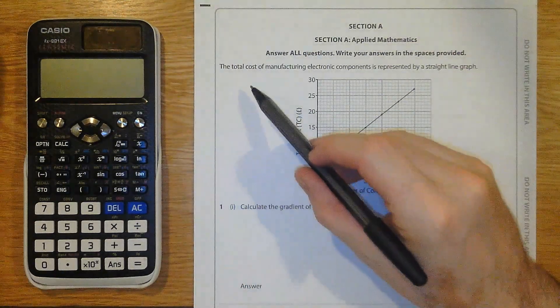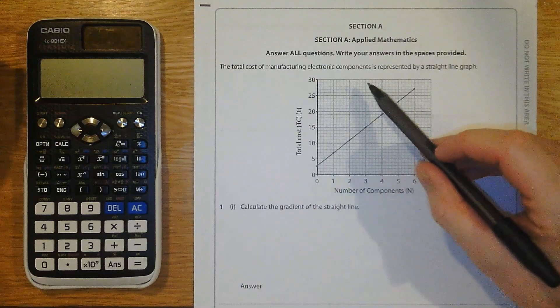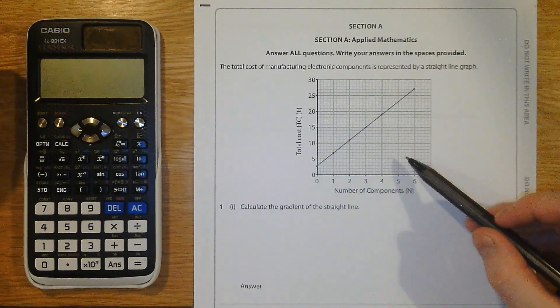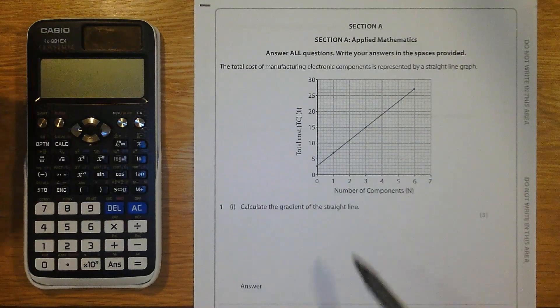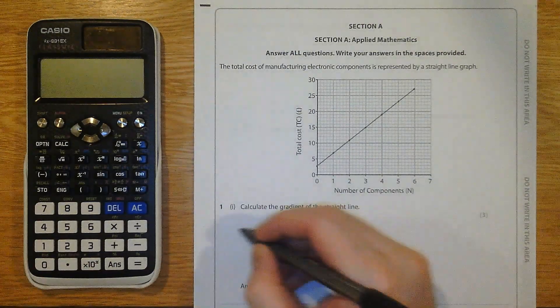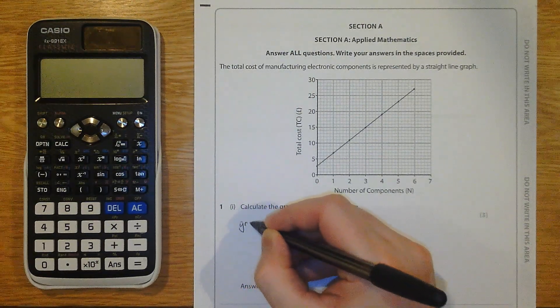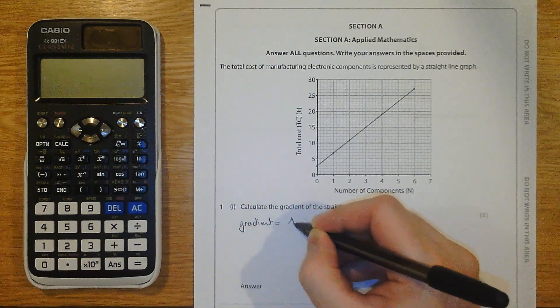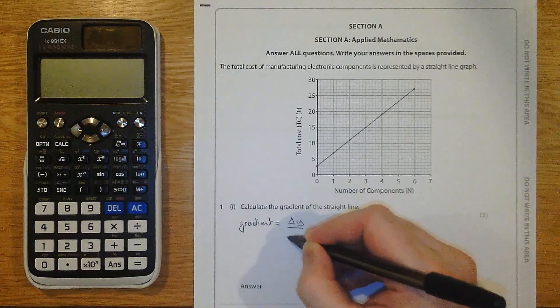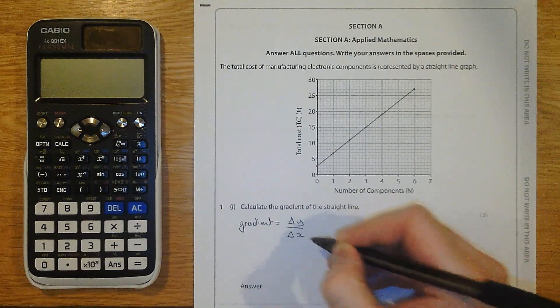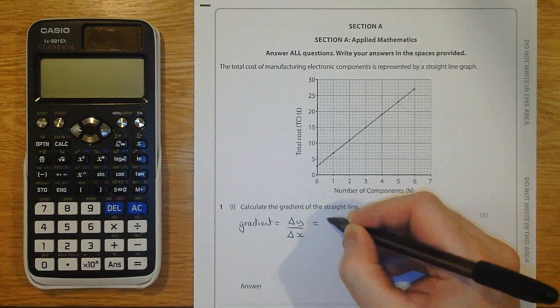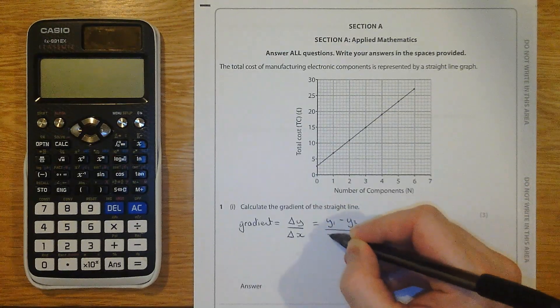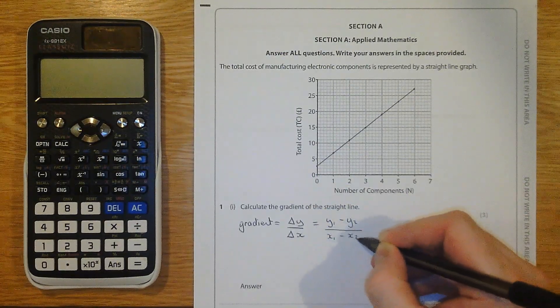Question 1. The total cost of manufacturing electronic components is represented by a straight line graph that we can see here. Calculate the gradient of the straight line graph. Gradient is given by the change in y over the change in x. This is sometimes written as y1 minus y2 over x1 minus x2.